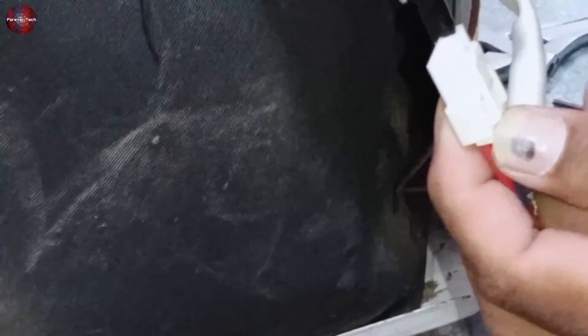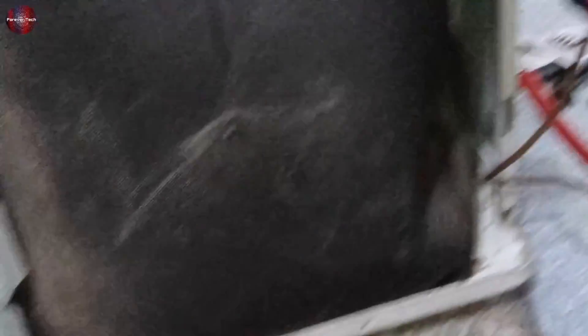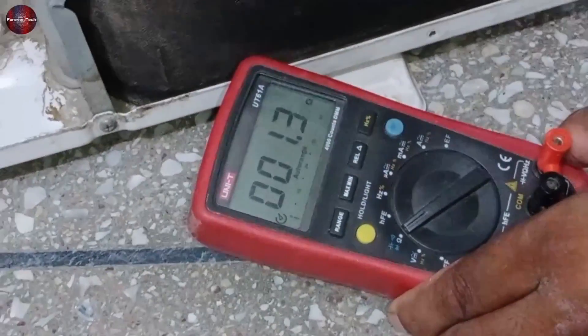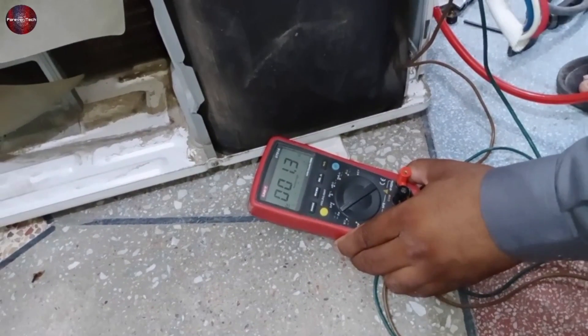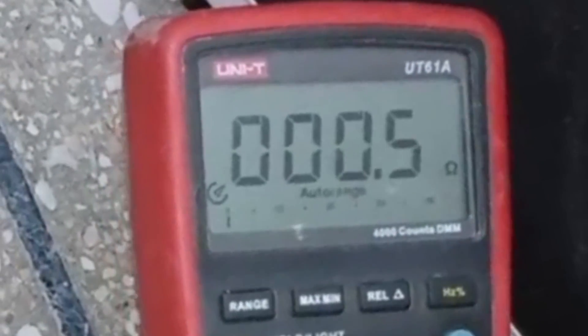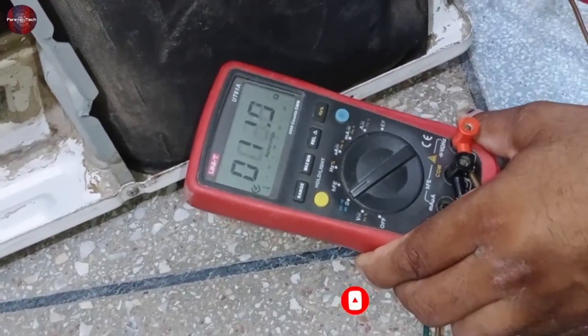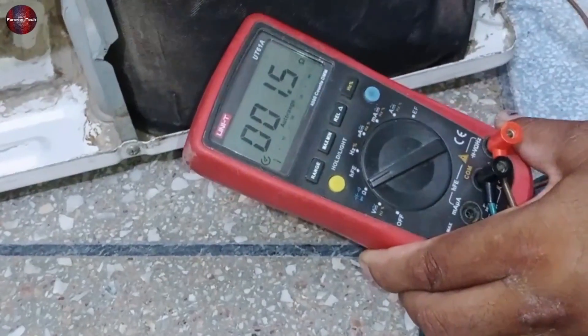Next, attach any one probe of the multimeter to the next terminal of the compressor. See, the multimeter is showing the value again, which is the same 1.3 ohms. Remove the black probe of the multimeter and attach it to the center of the connector for the compressor. The multimeter shows a 1.5 ohms reading, but it has adjusted the value to 1.2 ohms which is the same as previous readings.